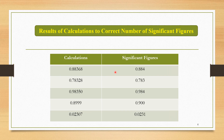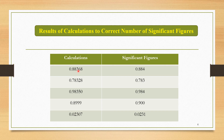The next tabular data considers adjusting results of calculations to the correct number of significant figures. The first result is 0.88368 — adjusted to three significant figures, it becomes 0.884. The reason we take 4 instead of 3 is that the next digit after 3 is 6, which is ≥5, so we add 1 to get 4. The second calculation is 0.78328 — the third digit is 3 and the next digit is 2, which is less than 5, so 3 remains as is, giving 0.783.